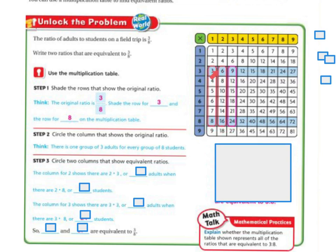I've got my row for 3 shaded, and I've got my row for 8 shaded. Then, circle the column that shows the original ratio. There is one group of 3 adults for every 8 students. For every 3 adults, there's 8 students.